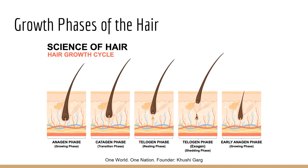Next is the telogen phase, or the resting phase, which lasts about three months. During this phase, while the old hair is getting ready to leave, a new hair is already starting to form in its place. About 10 to 15 percent of your hair is in this phase right now. The final part is the exogen, the second part of the telogen phase, where the resting hair slowly and gradually loosens and sheds from the skin. Then the process starts all over again.